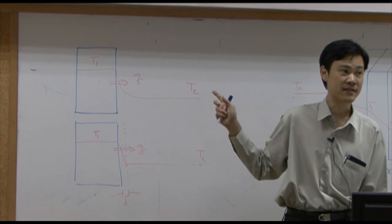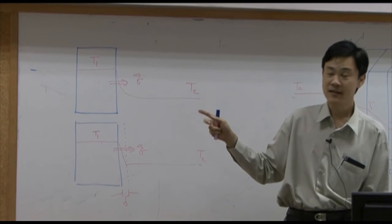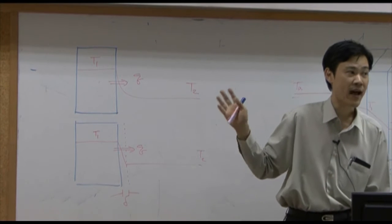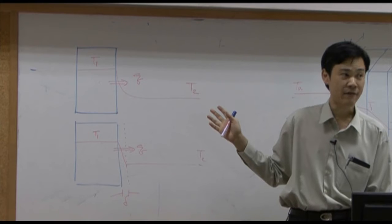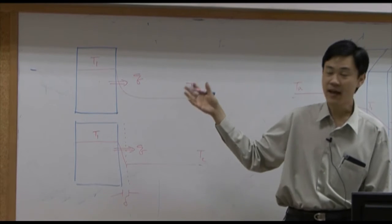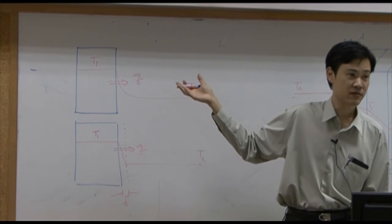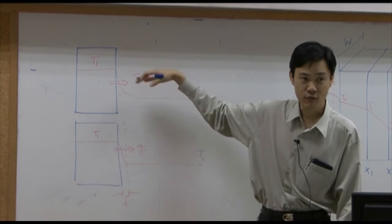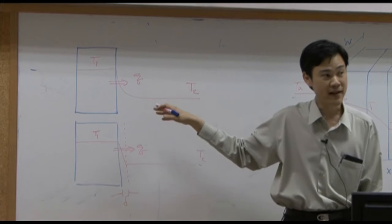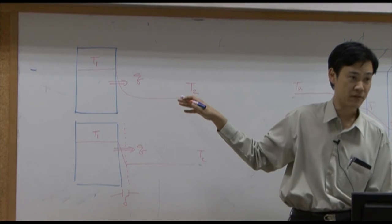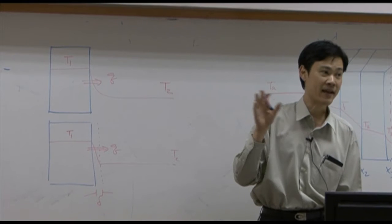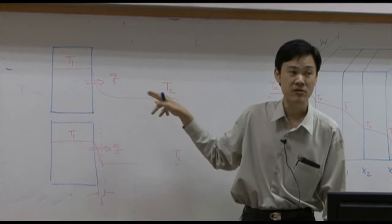Why is it not linear? Simply because in the ambient region, you may have conduction, and you may also have convection — you may have wind, or natural convection where hot air rises up and cold air comes to replace it. All these cases give you a nonlinear temperature profile.